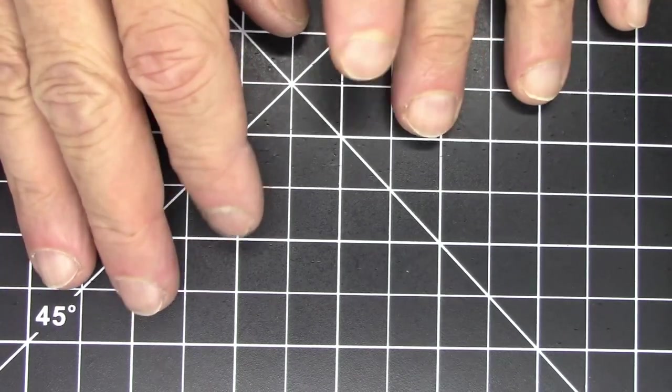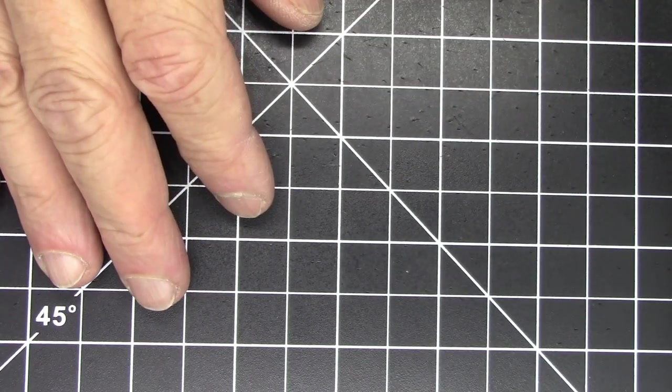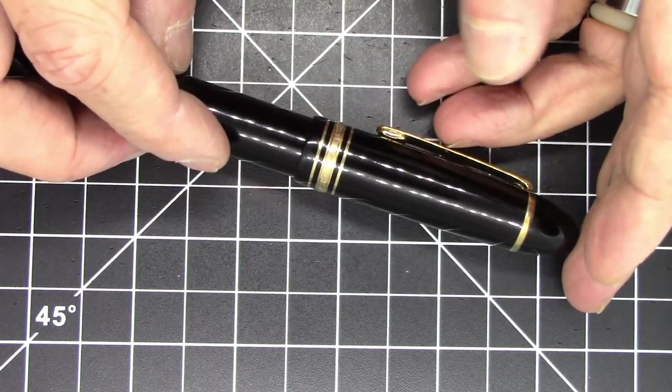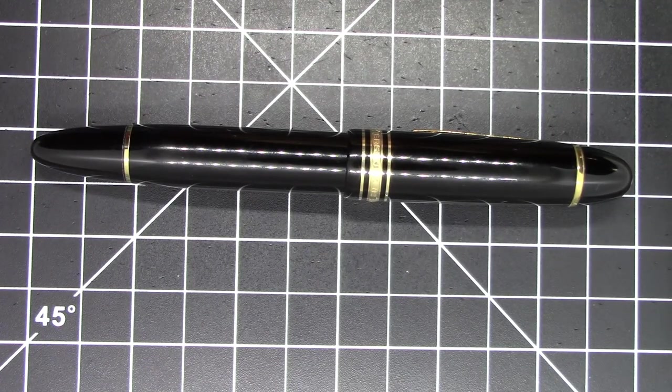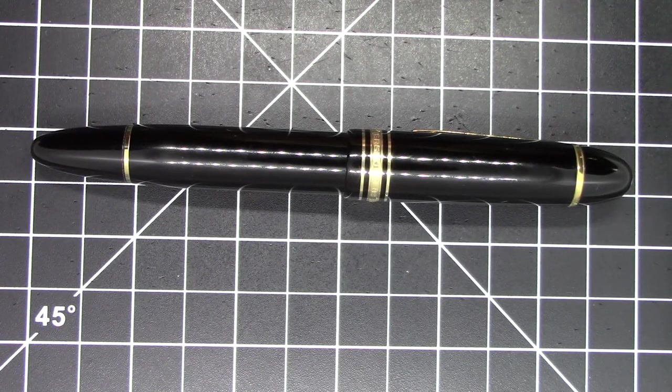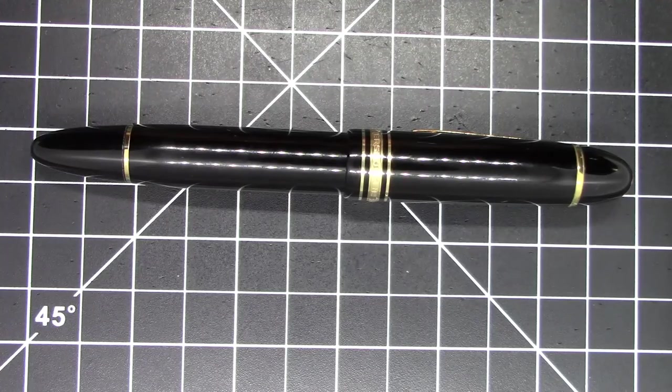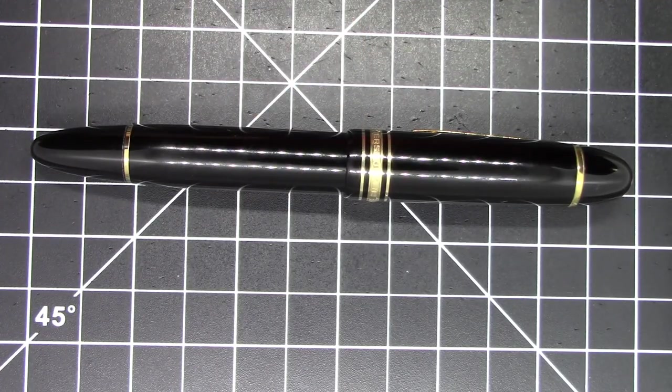I guess wouldn't be a pen video if we didn't see some writing. So for writing purposes, we're going to take a look at the Montblanc 149. Why not? That's the flagship and that's the one I'm going to write with. And I'm going to show you that right now.